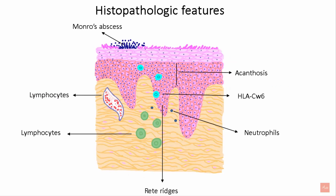The histopathological features: on the topmost layer there are Munro abscesses. There is also infiltration of neutrophils, lymphocytes, and the human leukocyte antigen HLA-CW6. Additionally, acanthosis of the layer is seen.